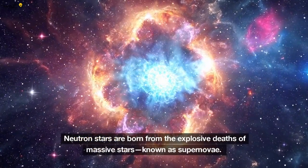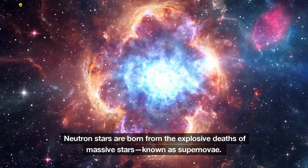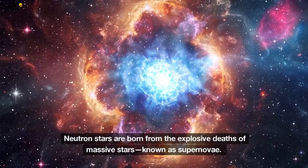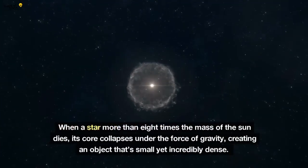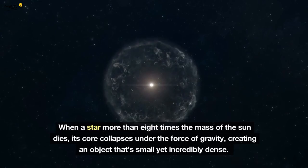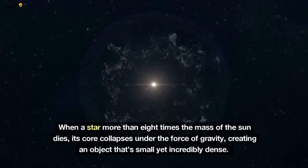Neutron stars are born from the explosive deaths of massive stars, known as supernovae. When a star more than eight times the mass of the sun dies, its core collapses under the force of gravity, creating an object that's small yet incredibly dense.